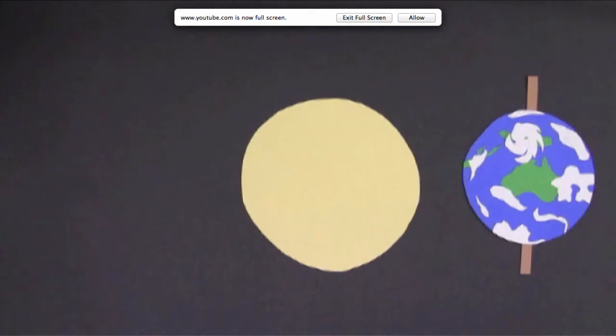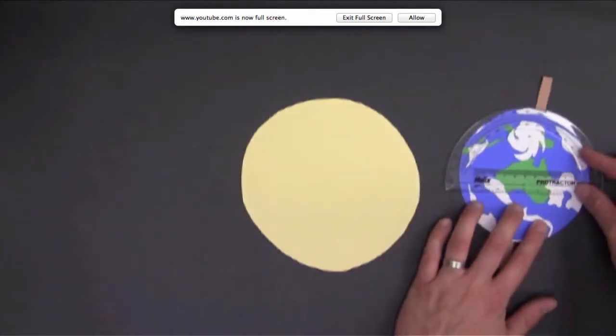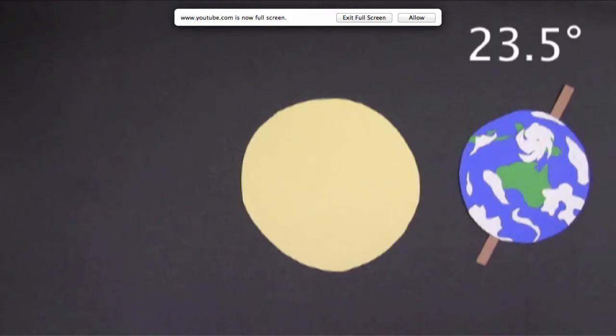The important thing, for the seasons at least, is that the earth actually isn't straight up and down. It's tilted at an angle of 23.5 degrees.